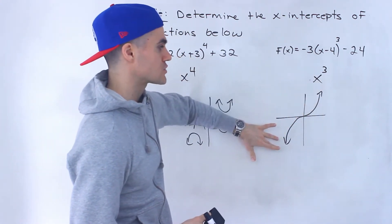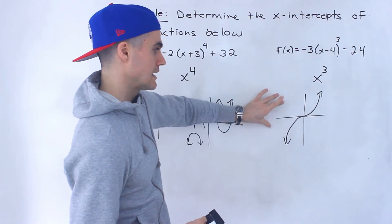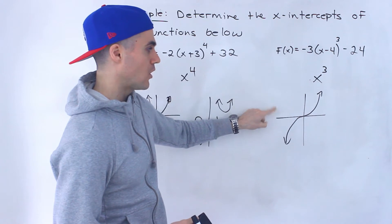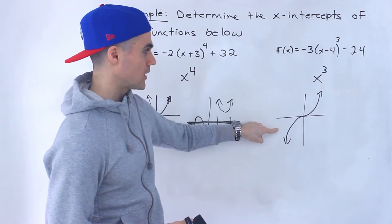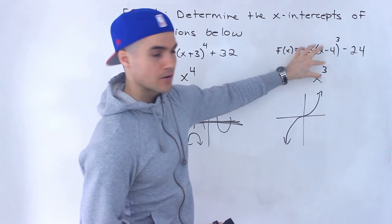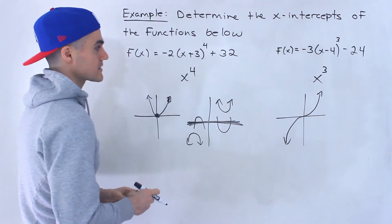Because it has opposite behavior. So it's going to cross that x-axis one time. Always only one time, it can't cross it twice. So there's always going to be, for x^3, no matter how it's transformed, there's always going to be one x-intercept.